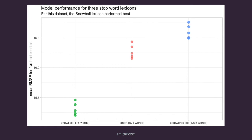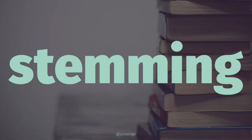This plot compares model performance for predicting the year of a dataset of Supreme Court opinions with three different stop word lexicons. The smallest lexicon, the Snowball lexicon, results in the best performance — so removing fewer stop words results in the best performance here, though it does perform better than removing none at all. This specific result is not generalizable to all datasets everywhere, but the fact that removing different sets of stop words can have a noticeably different effect on your model is quite transferable, and the only way to know which one is right is to try several different options.